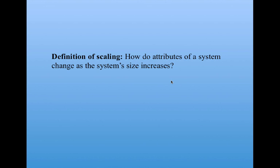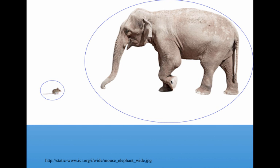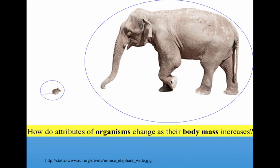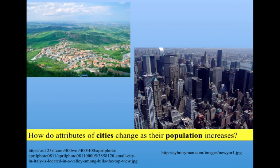The field of scaling asks how attributes of a system change as the system size increases. For example, in biology, we might ask how attributes of organisms change as their body mass increases. Or in urban scaling, a very popular area nowadays, we might ask how attributes of cities change as their population increases.